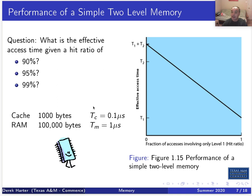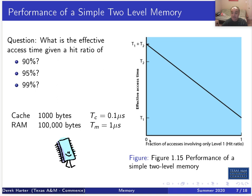Let's make this concrete with an example. Our cache might have a total size that's smaller because it's more expensive than RAM. Cache is our fast memory and RAM is our slower memory. We might have only 1000 bytes of cache but it's 10 times faster — it takes just 0.1 microseconds to access a value from cache. RAM is much bigger and less expensive but much slower — it takes a whole microsecond to get a value from RAM.